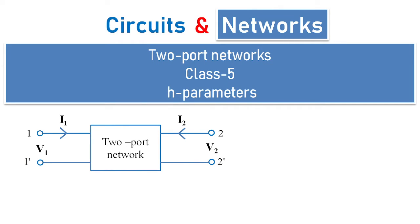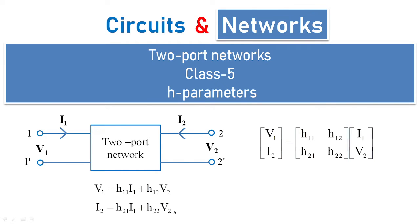Welcome to another session of circuits and networks. In today's class 5 under two-port networks, we are going to deal with h parameters. We are well aware of this two-port network where the h parameters are given by: v1 = h11·i1 + h12·v2, and i2 = h21·i1 + h22·v2. In matrix form, v1 and i2 are expressed in terms of i1 and v2 under h parameters.